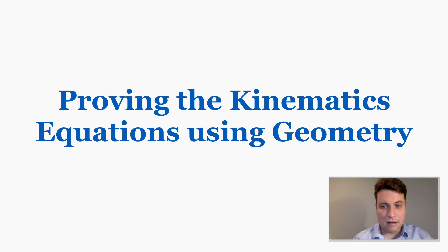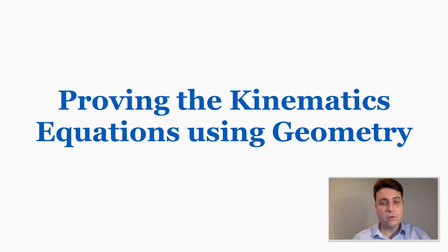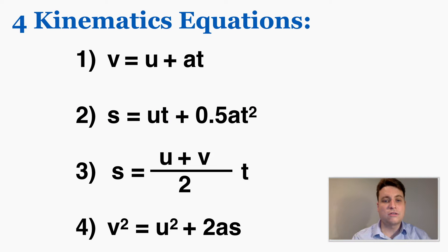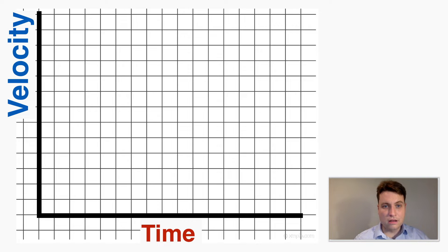Now that you know what the kinematic equations are and what they do, I want to take one video lecture to explain why they look the way they do. There are two ways you can prove kinematic equations: one is with geometry and the other is with calculus. I'm going to stick with geometry for now because it's a little more accessible. These proofs are going to be based on the geometry of a velocity-time graph.